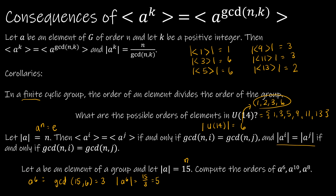That's how we use that particular corollary. For A to the 10th, the GCD of 15 and 10 is 5. So to find the order of A to the 10th, I take 15 divided by 5, which is 3. So the order of A to the 10th is 3. And for A to the 8th, the GCD of 15 and 8 is 1. So the order of A to the 8th is 15 divided by 1, or 15. Essentially, A to the 8th would generate the entire group, because it has an order of 15, just like A.